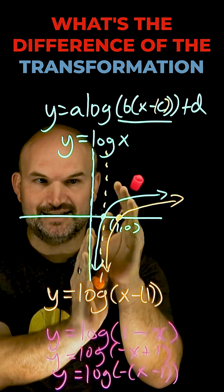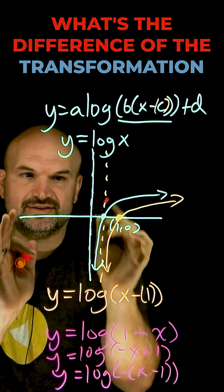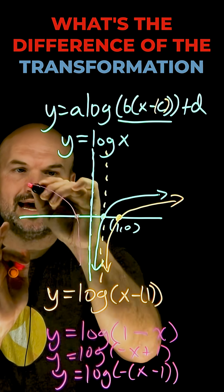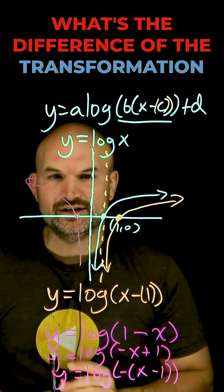So actually what I need to do is take this green graph, I need to reflect it about the y-axis so it looks something like that, and then I need to shift it one unit to the right.